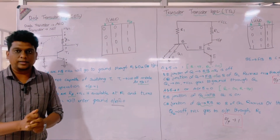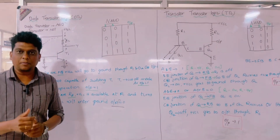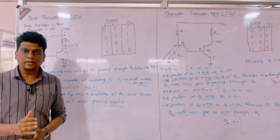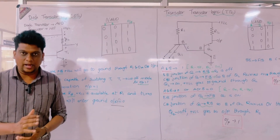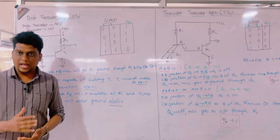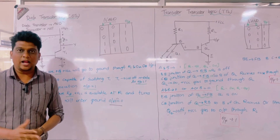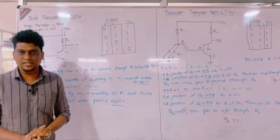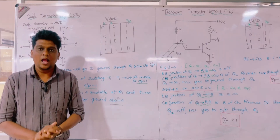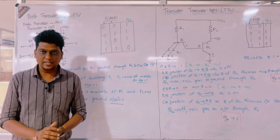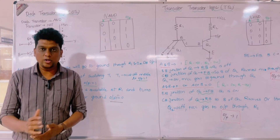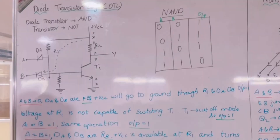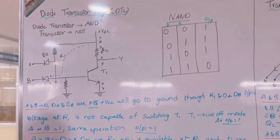A transistor is a type of semiconductor device having three terminals: emitter, base, and collector. It can be classified into BJT and FET. A bipolar junction transistor is a current-controlled device, while a field effect transistor is a voltage-controlled device. Here we are taking the bipolar junction transistor.